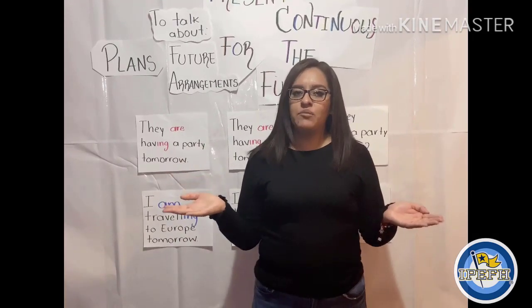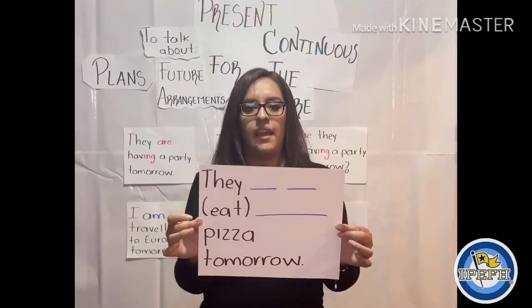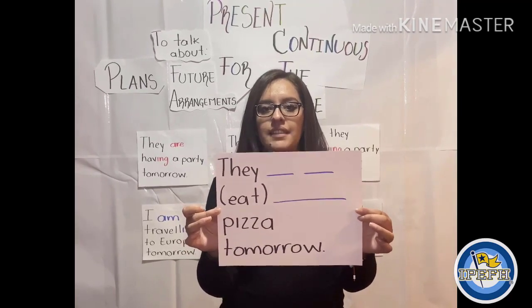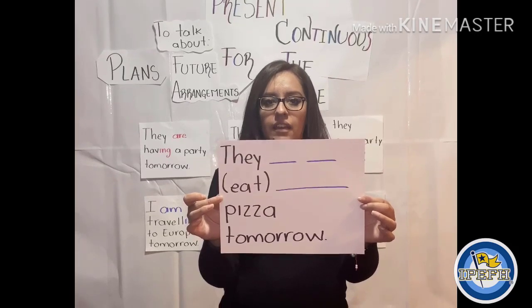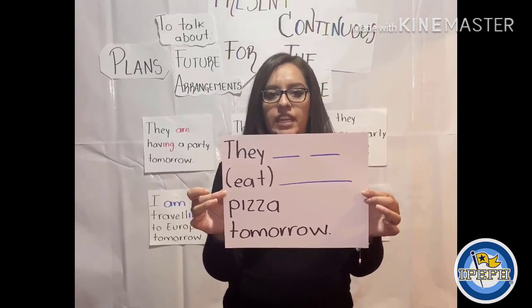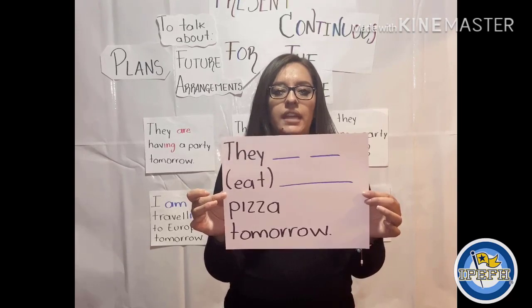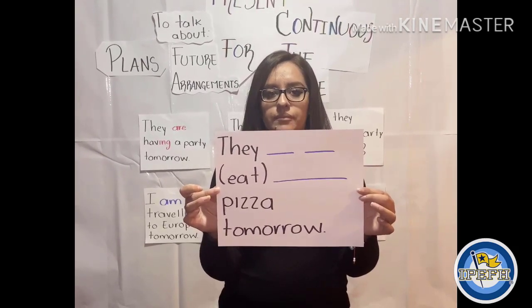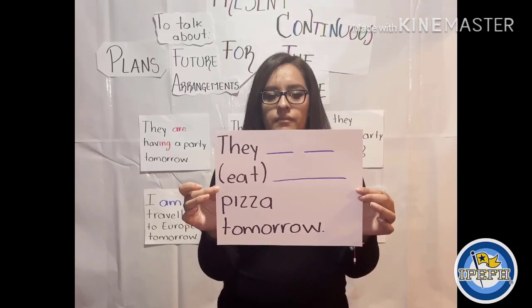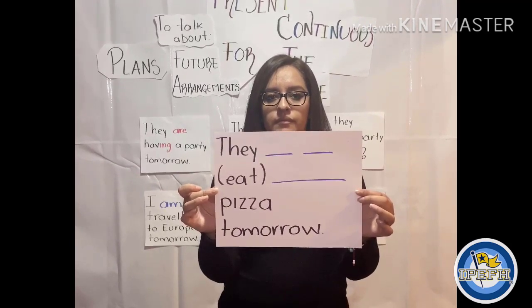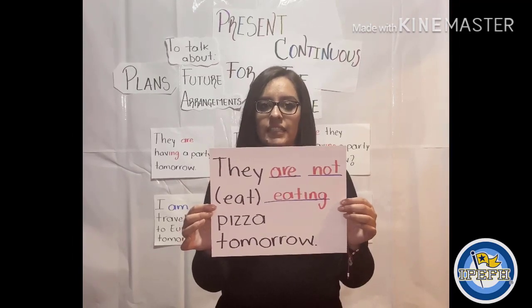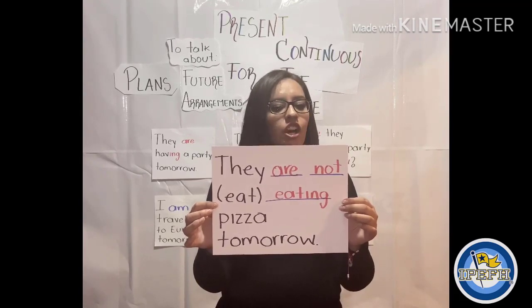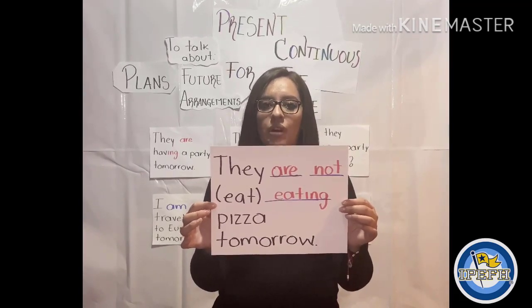Now it's time to do some practice. Here we have the examples, so please help me at home. The sentence is: they ___. The verb is eat — eat ___ pizza tomorrow. This is a negative sentence. The correct answer is: they are not eating pizza tomorrow.